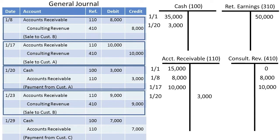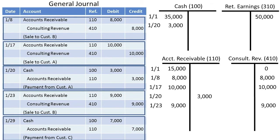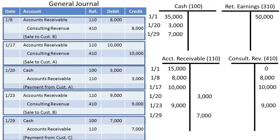We then made a sale of $9,000 on account to customer B and posted that to the respective accounts. We then collected $7,000 from customer C and posted that to the respective ledger accounts.